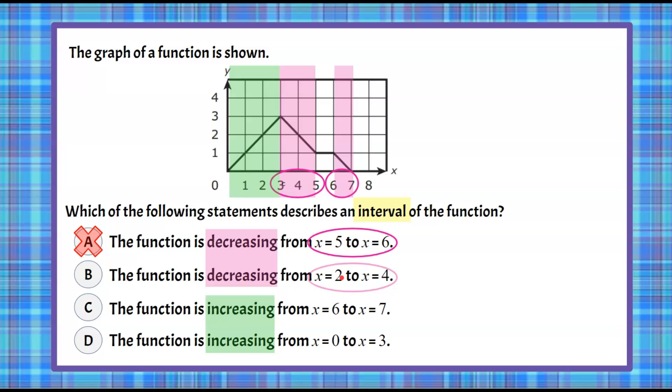Then we're looking between 2 and 4 on our graph. Between 2 and 4, that crosses over between increasing and decreasing, so we know that it's not just decreasing there.